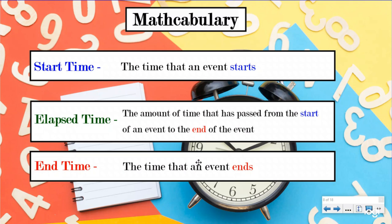Obviously anything you do has a start time and end time. Even if you don't label it that, it still does. You start doing something, then time flows, and then you end it. The elapsed time is the amount of time that has passed while doing that event, from the start of something to the end of something.